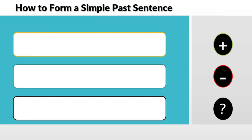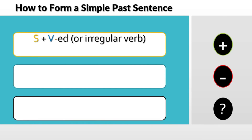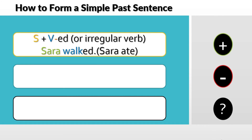How do we form a simple past sentence? In the affirmative it would be subject plus verb and then the suffix -ED for a regular verb. For an irregular verb it would be subject plus the irregular verb form. For example: 'Sarah walked' — subject plus verb with -ED — and 'Sarah ate' — an irregular verb.